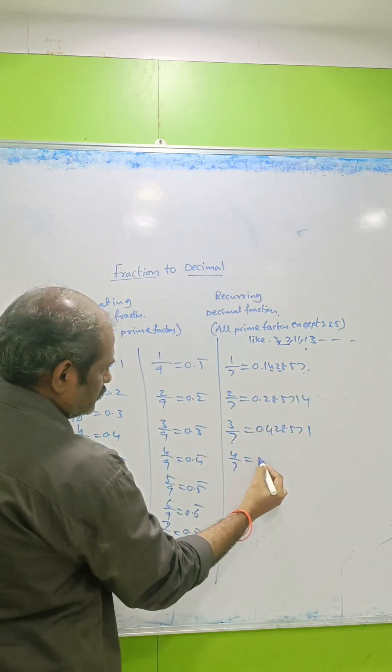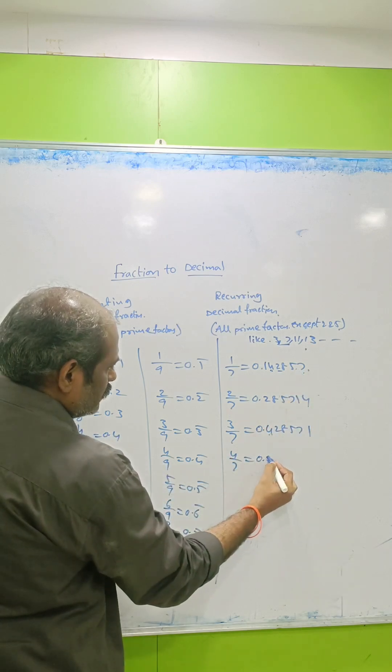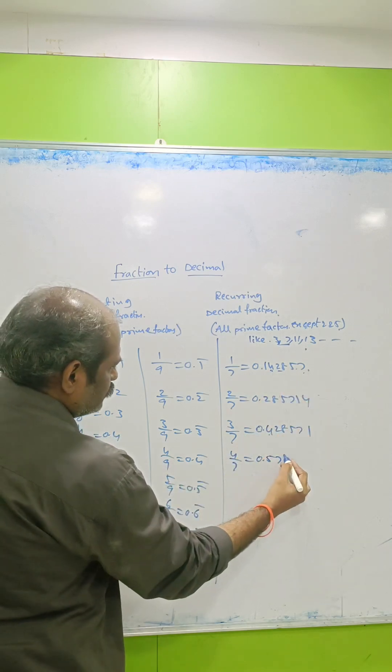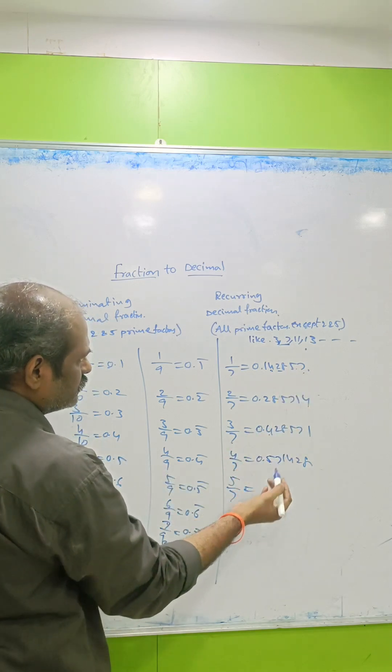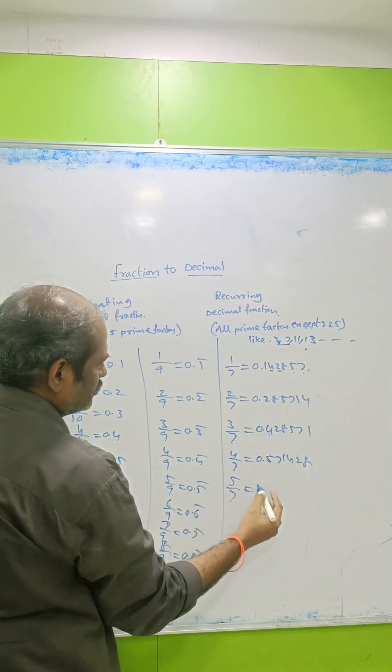For 5/7, 5 is already used, so after 5 we get 7. The decimal starts with 7: 0.714285. For 6/7, there's no 6 at the start, so after 6...